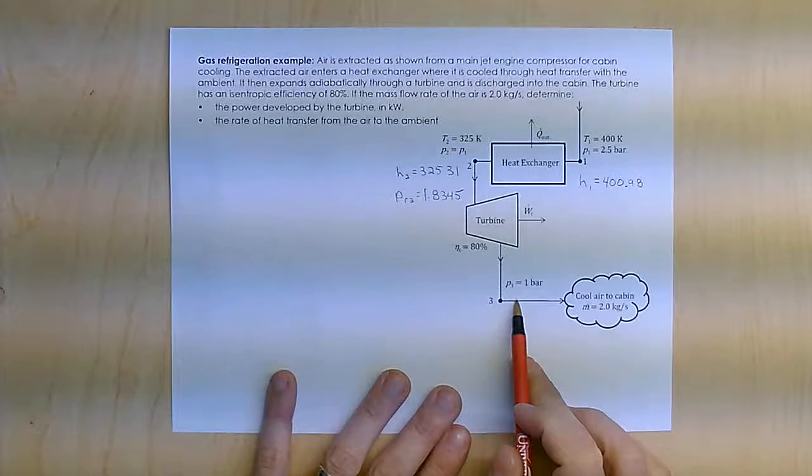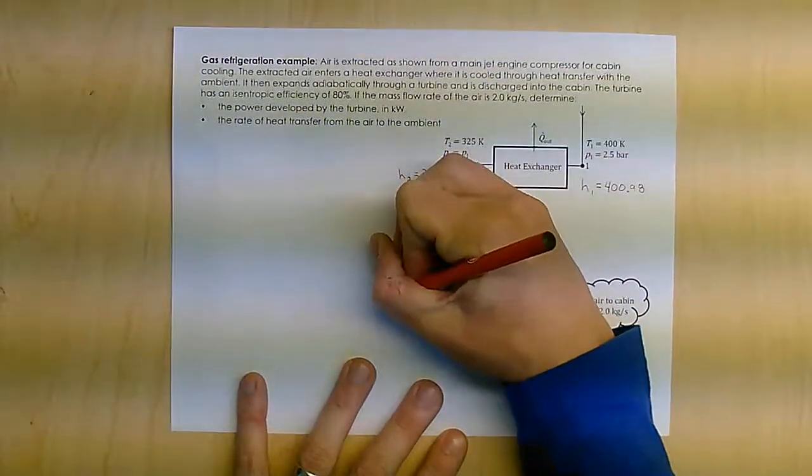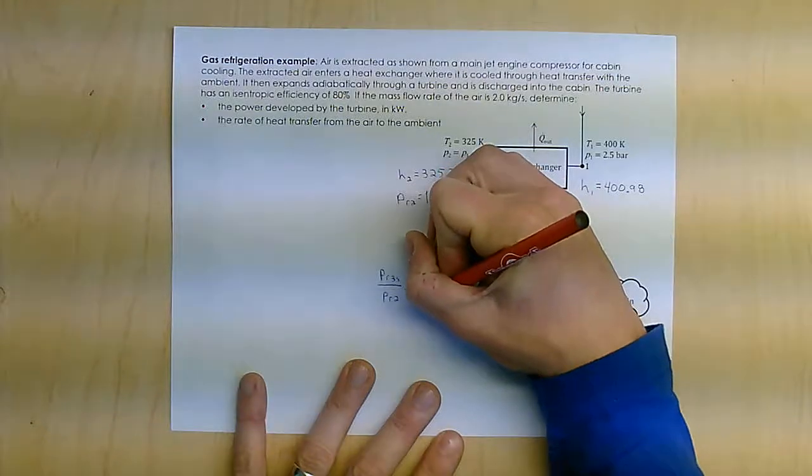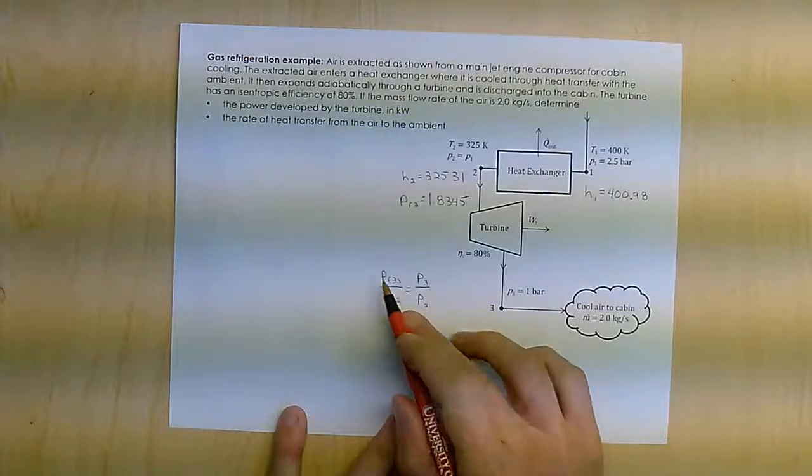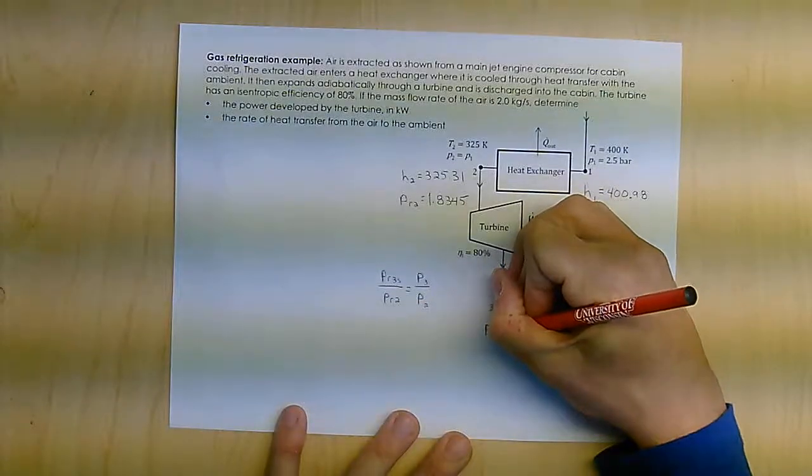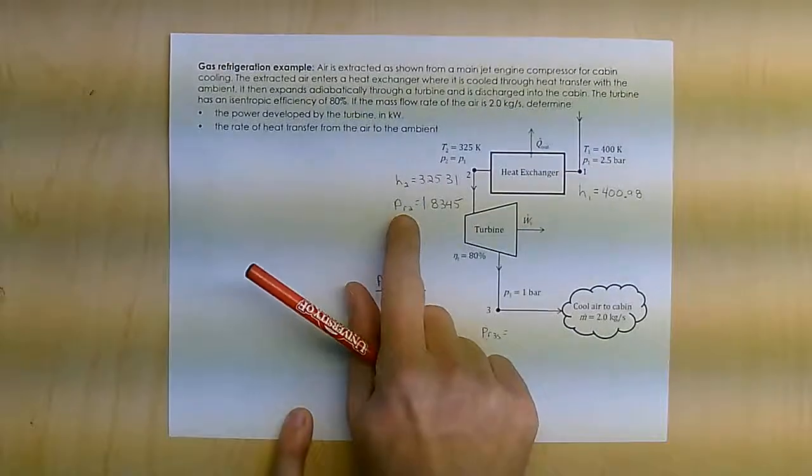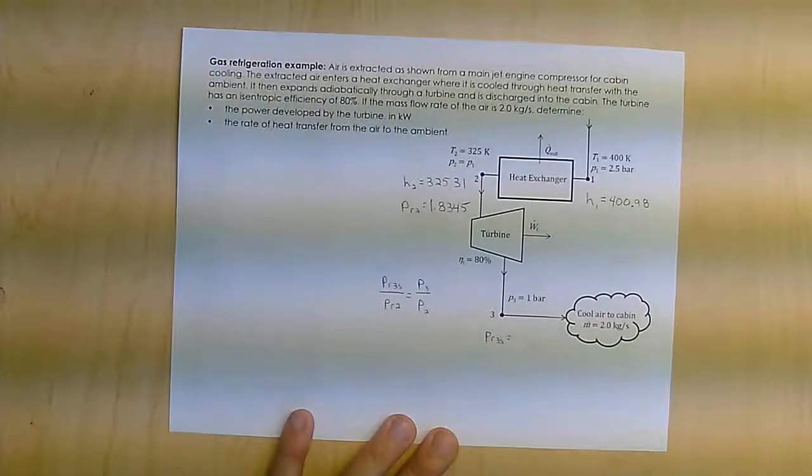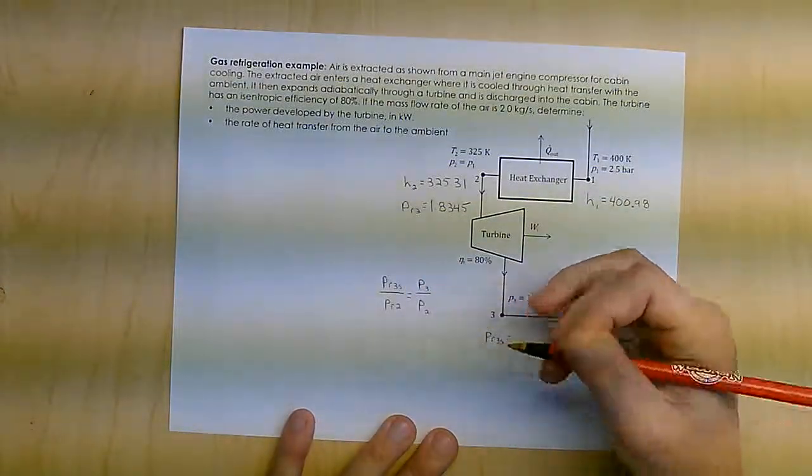Now, coming across here again, I know my pressure. So what I'm going to do is I'm going to use PR3S over PR2 equals P3 over P2. And then from that, I can find PR3S. This would be for the isentropic case going across this turbine. I know PR2, I know P2, P3. So I can calculate PR3S. And from that calculation, with the 2.5 factor, I get 0.7335.